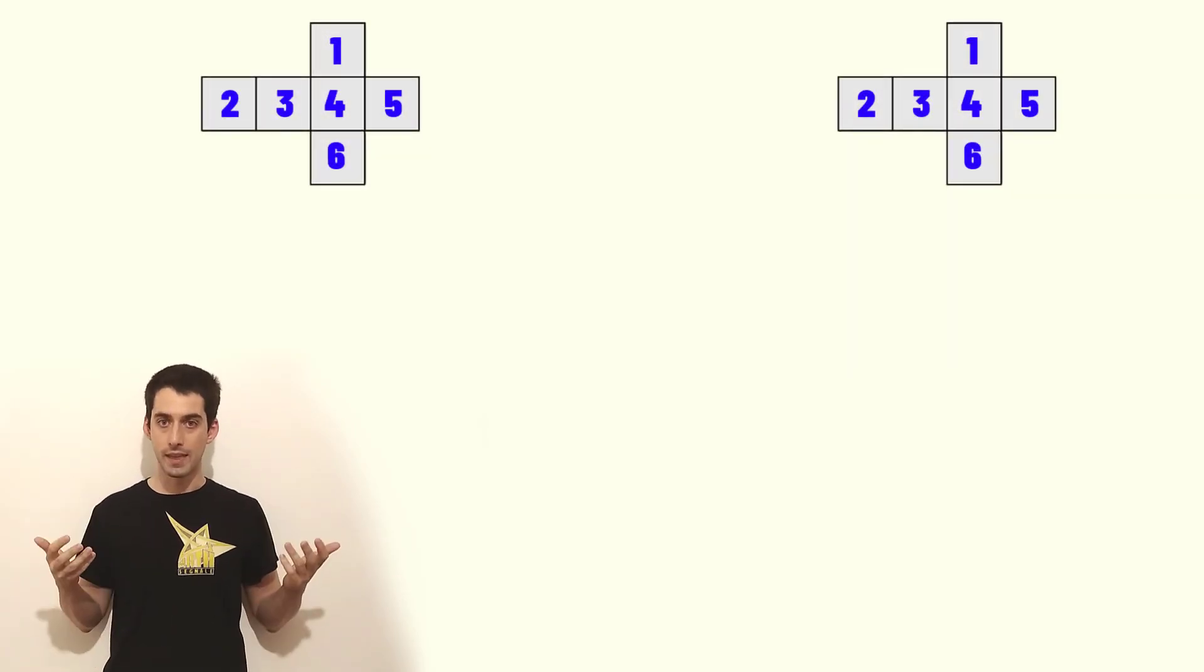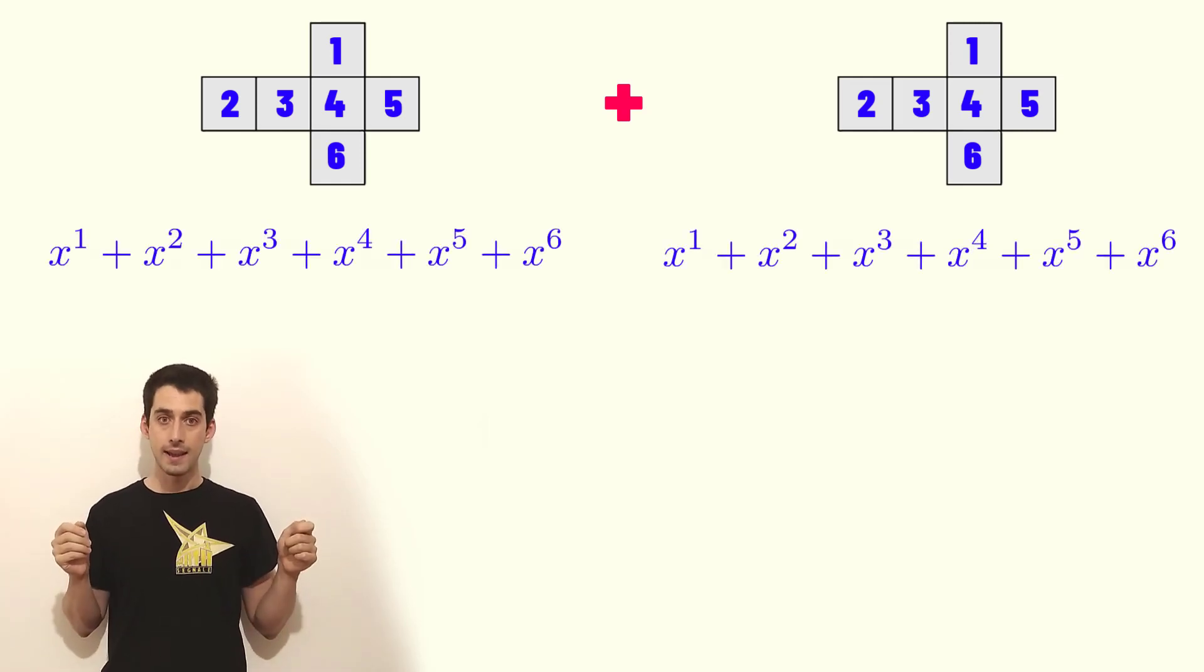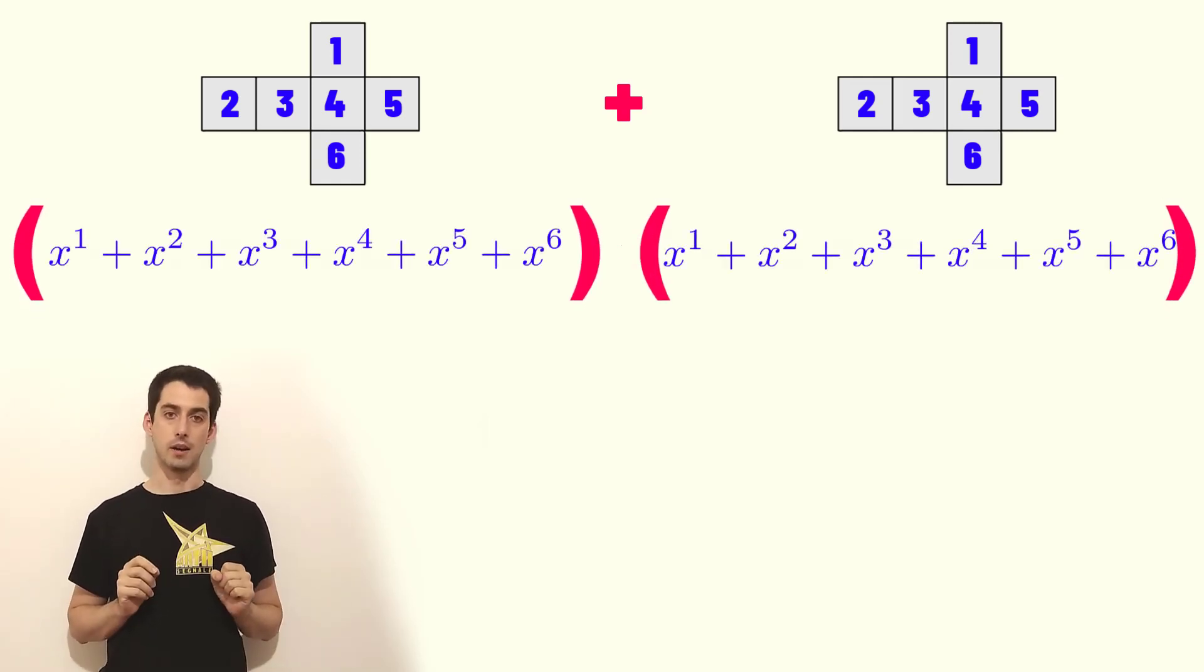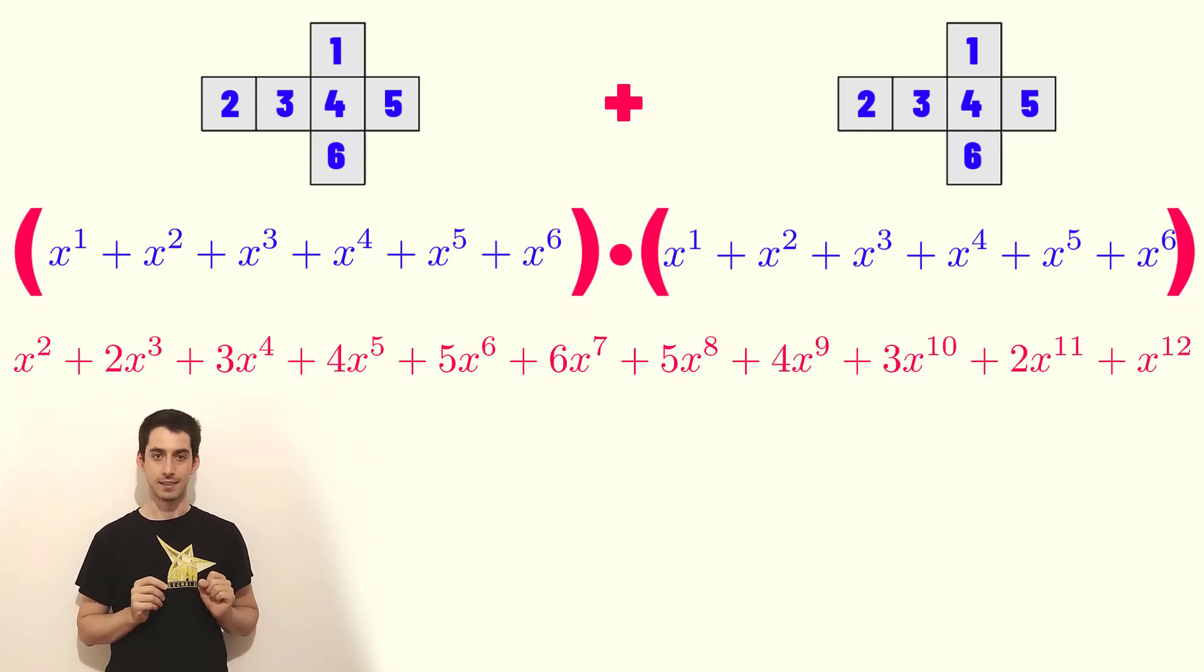Well, at the beginning we took two normal dice, rolled them and we take the sum of the results. So let's take the corresponding polynomial and let's multiply them together. This is the result and did you notice something?